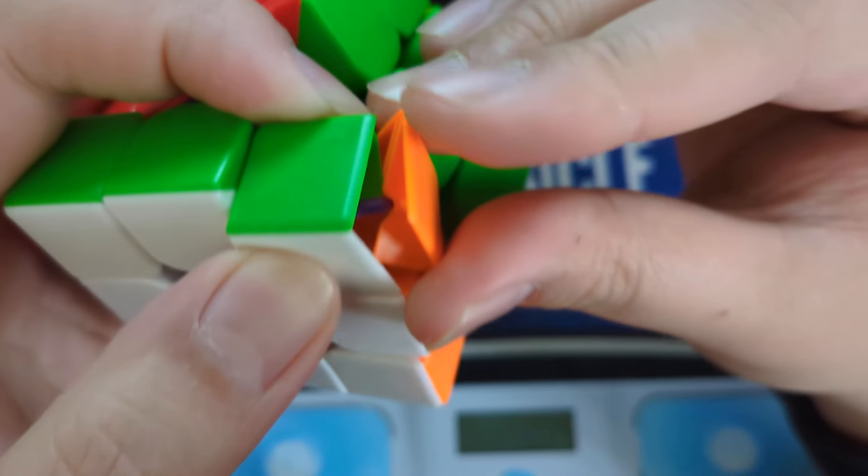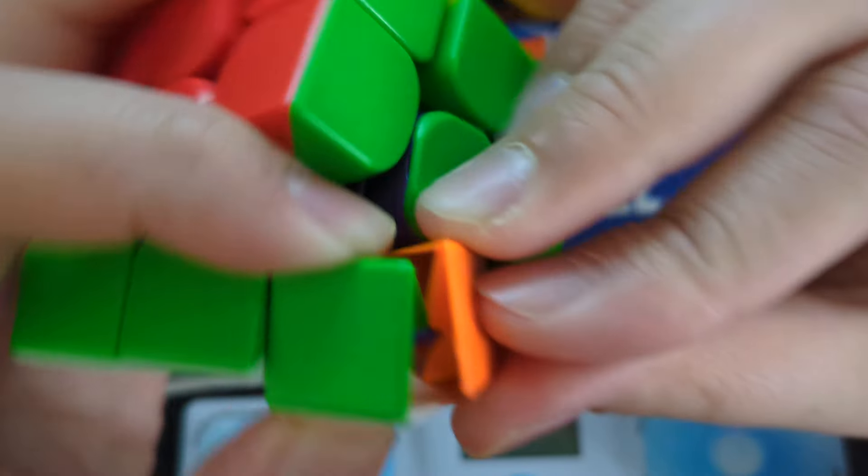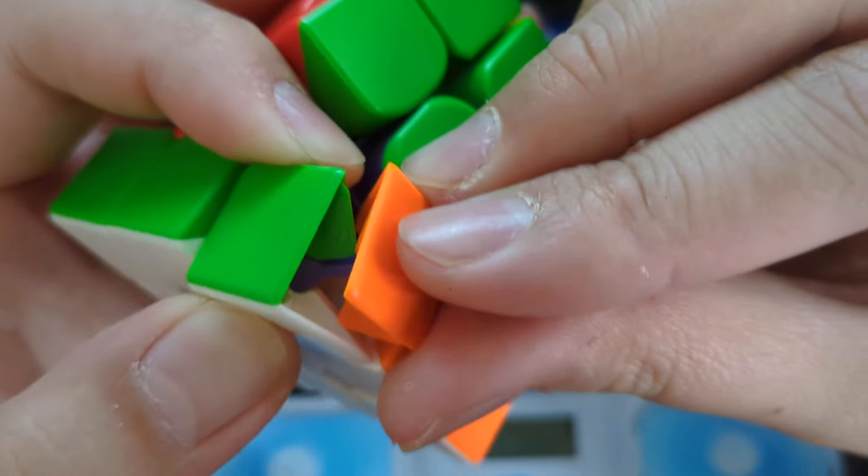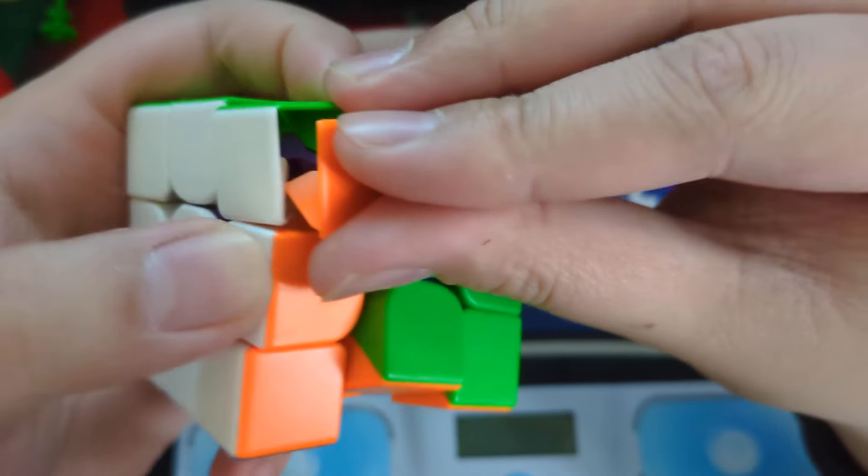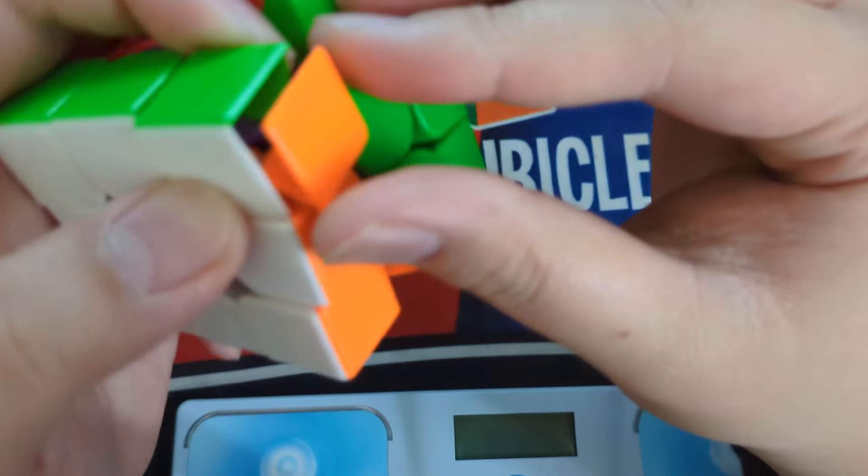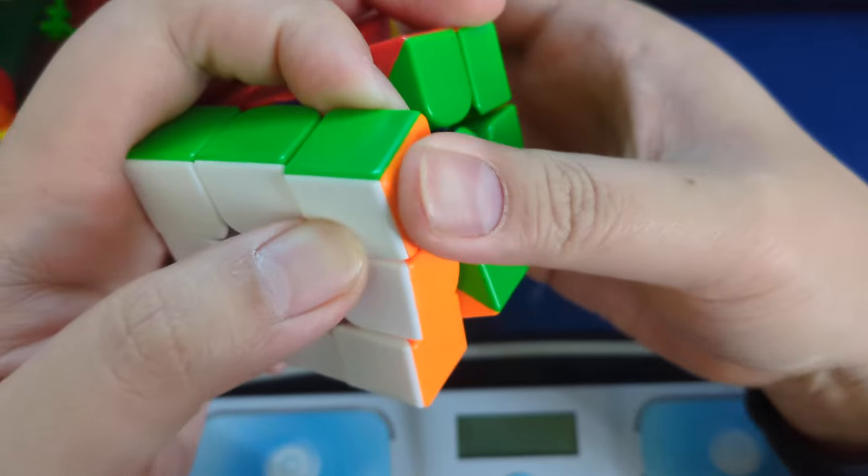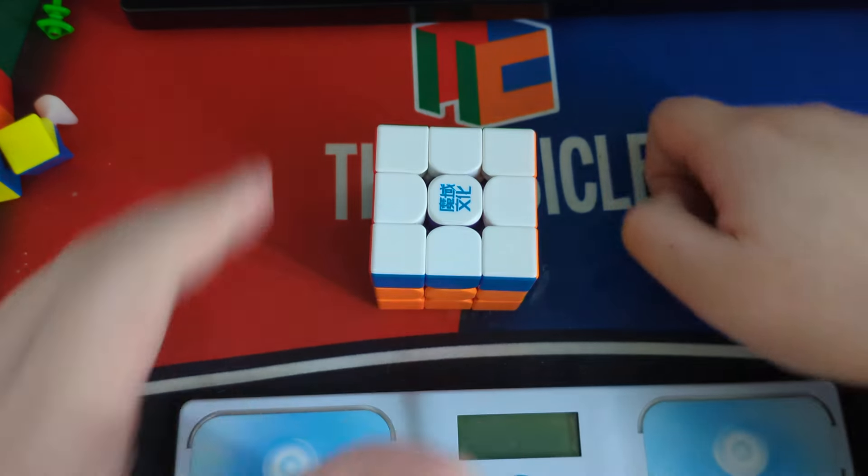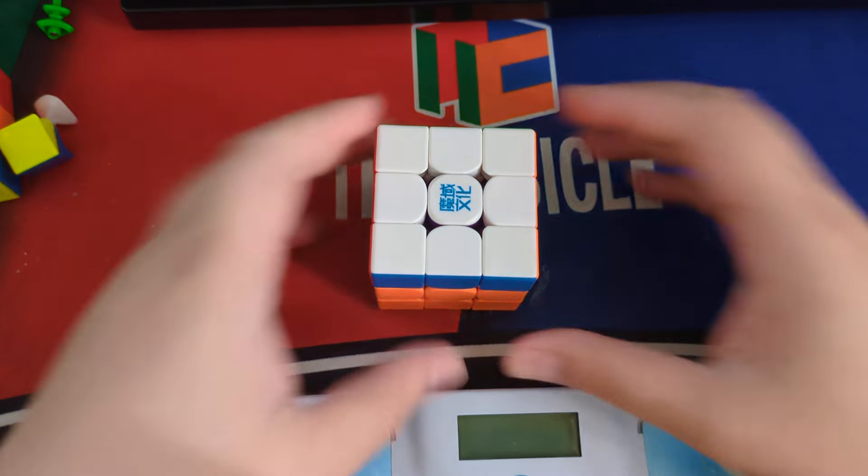We're going to slowly push that in, making sure that the flap goes into this slot right here from the green. And we have that orange flap going into the white. So once it's kind of all aligned, we just give it a nice push and that's how you put the third back into the puzzle.